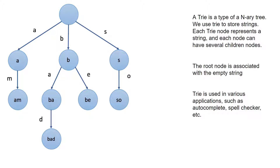We use Trie for various applications such as autocomplete, where a user inputs a character and they have a bunch of options to autocomplete the string they're typing. We can also check spelling to see if a character is correct based on the current dictionary. We can use this Trie data structure to store strings — for example, the string 'bad'.